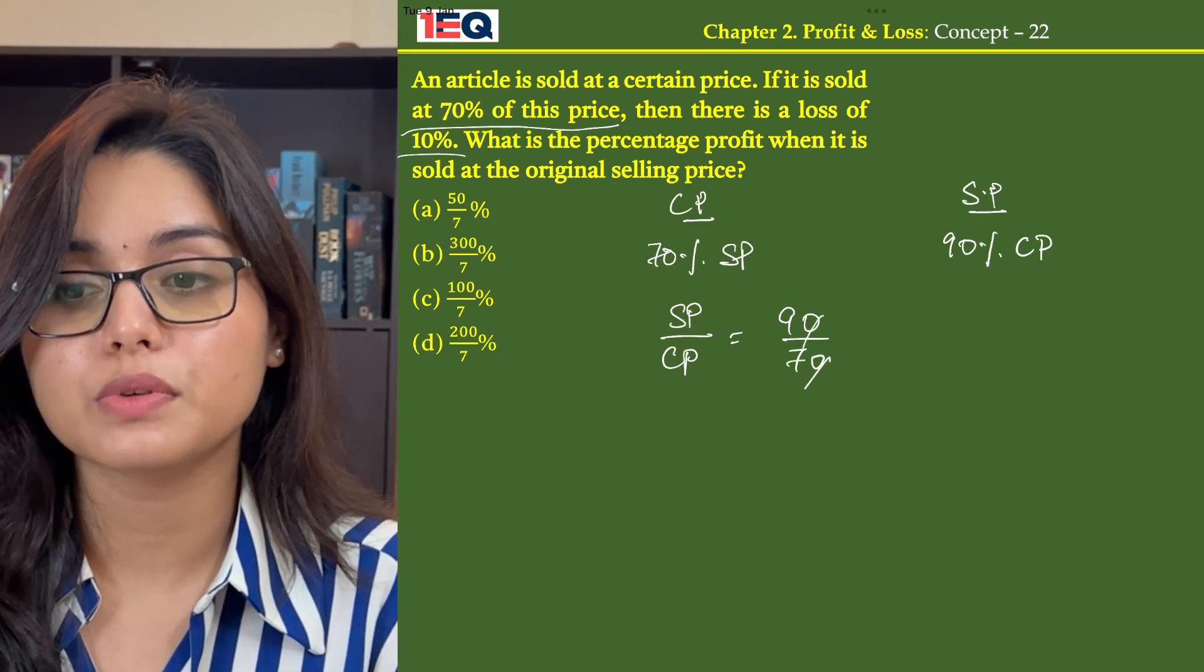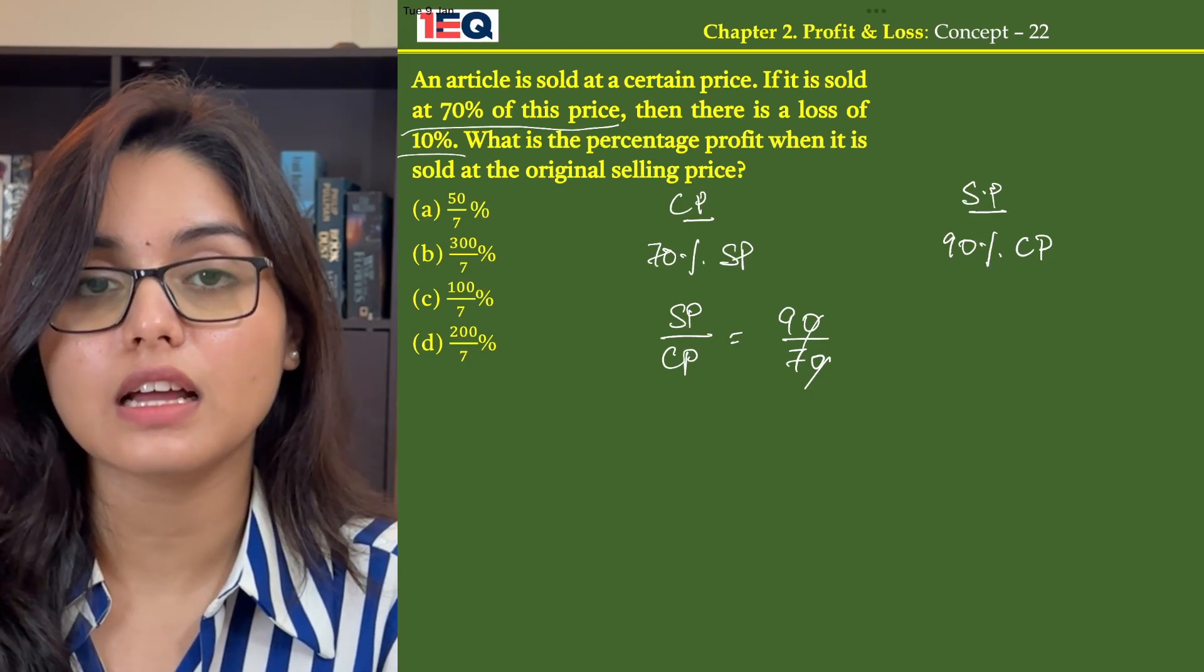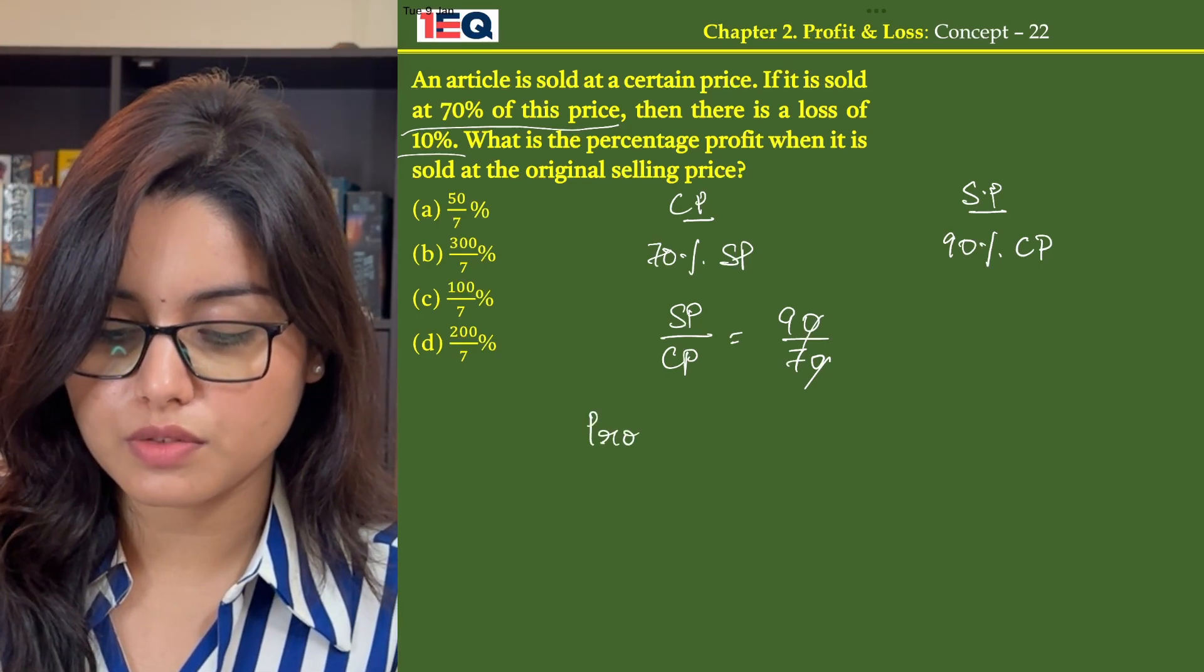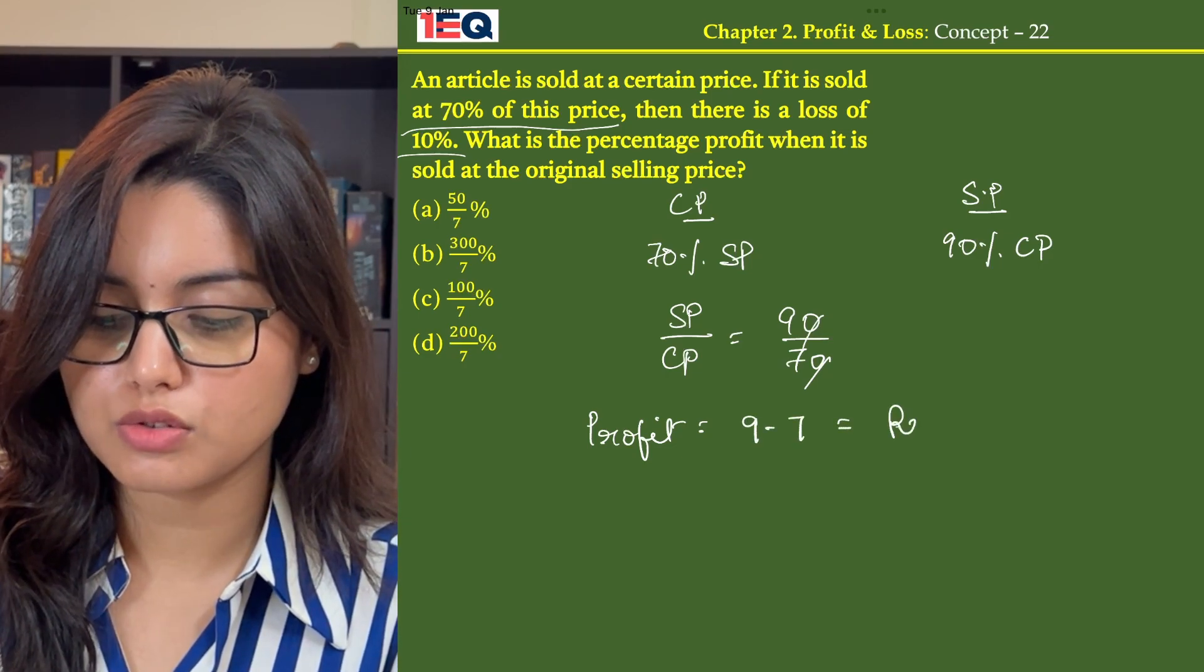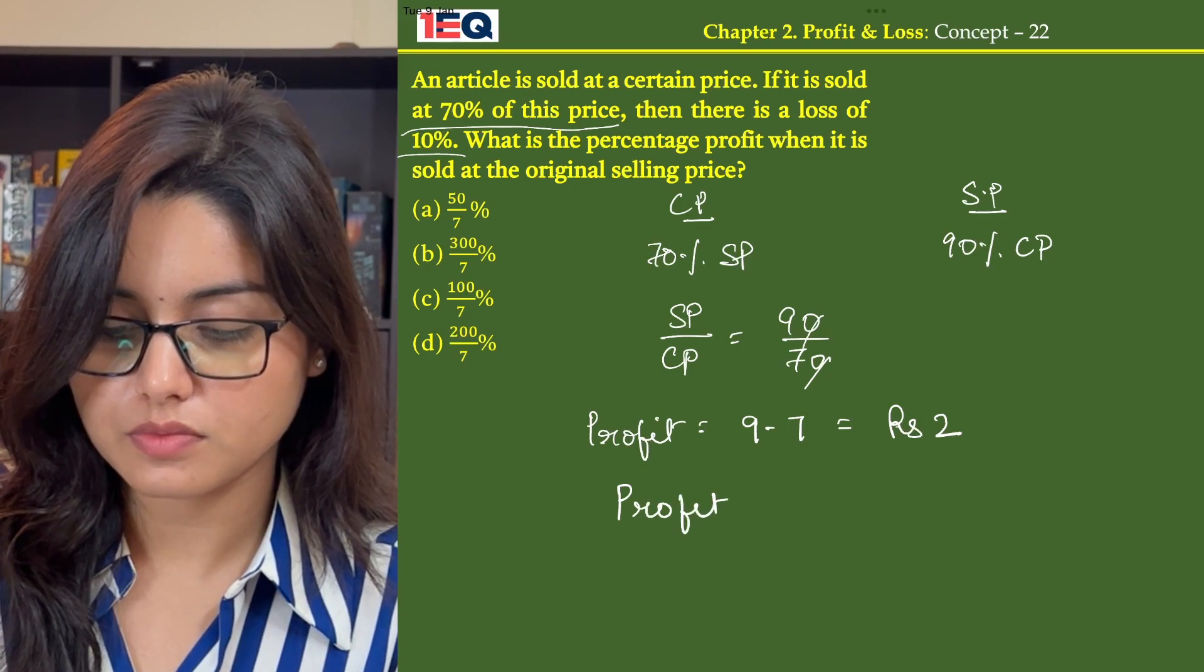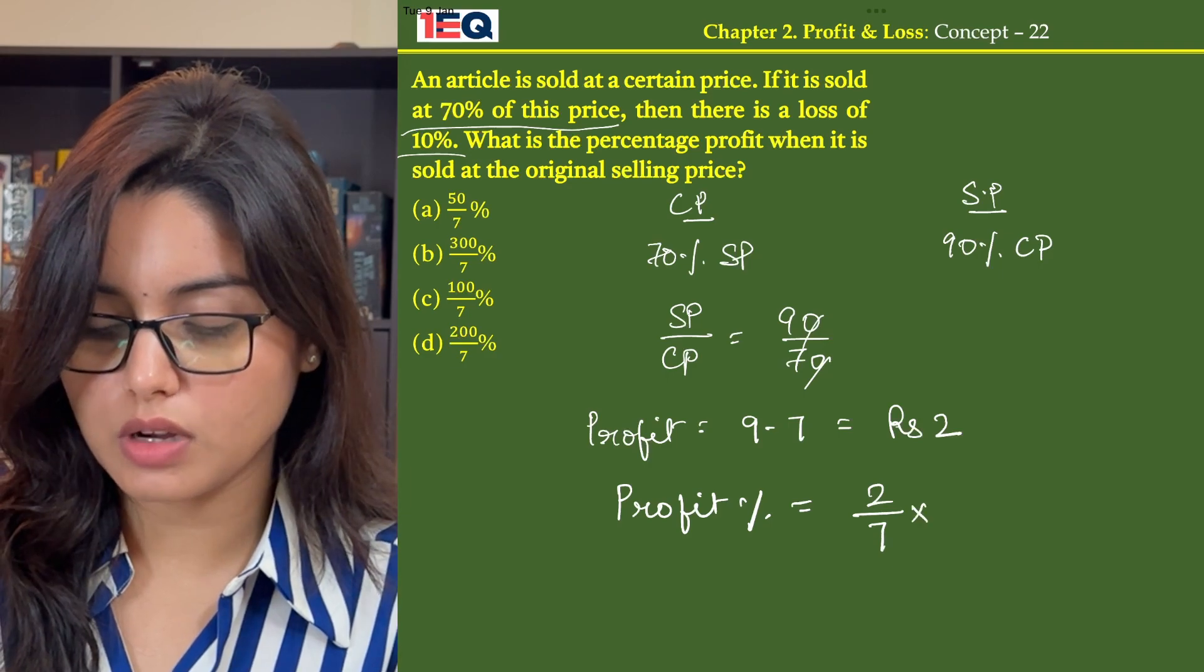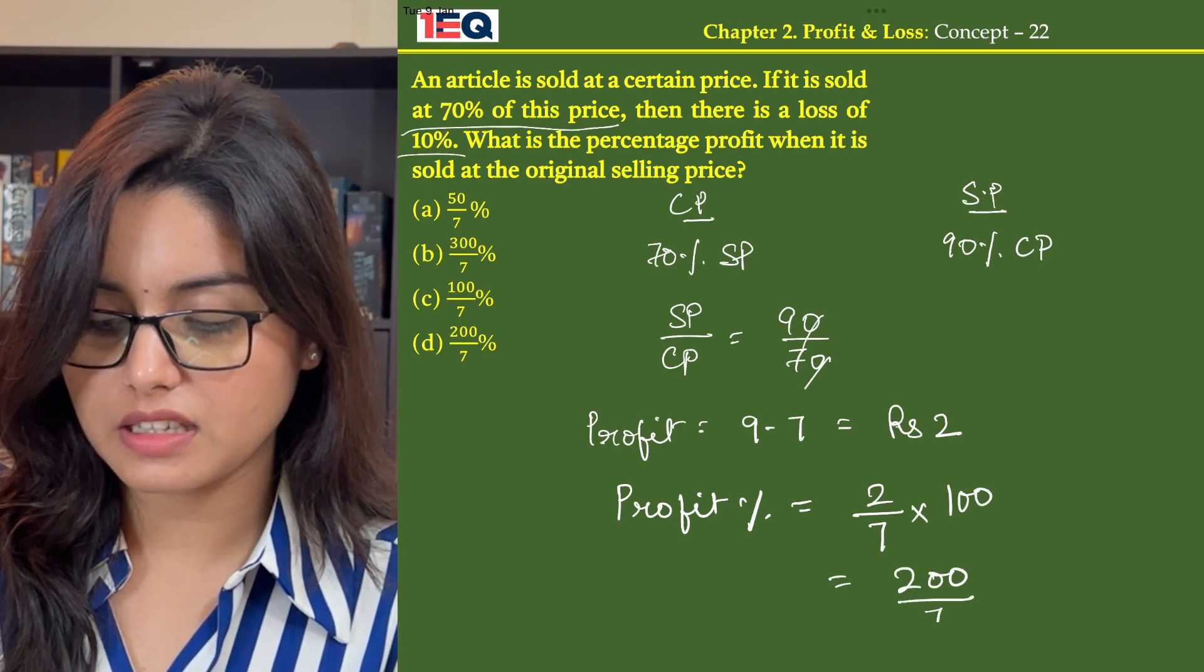Now, if the cost price of an article is 7 and we sell it at 9, how much is the profit? So the profit amount is 9 minus 7, that is rupees 2, and profit percentage is 2 by 7 into 100. That is 200 by 7 percentage.